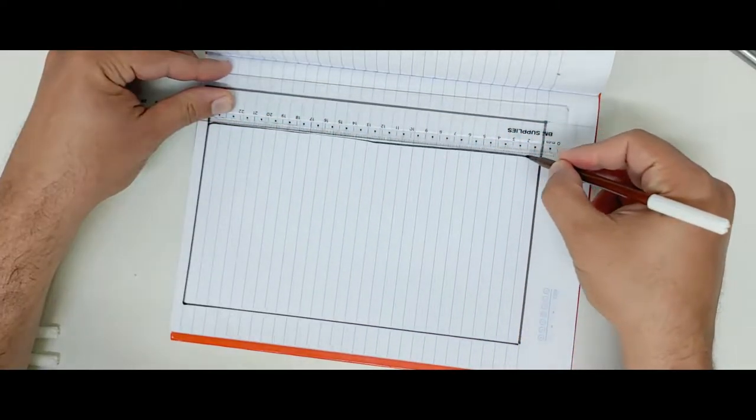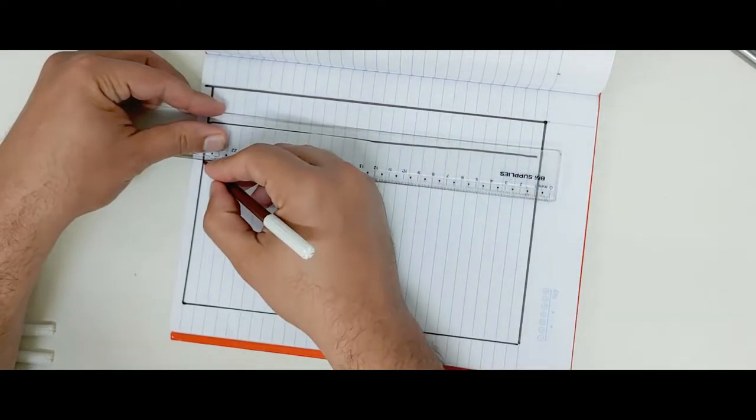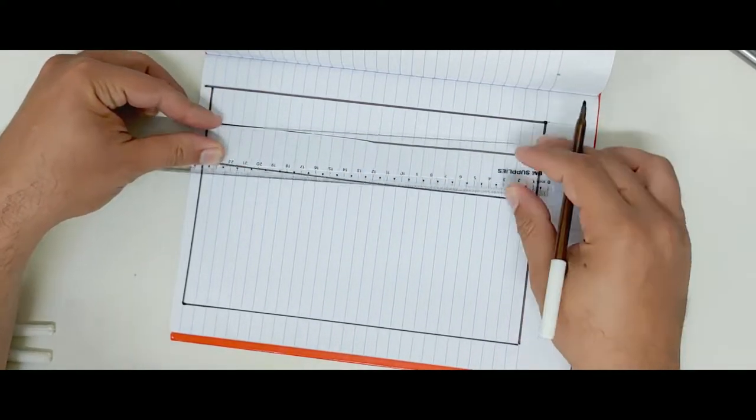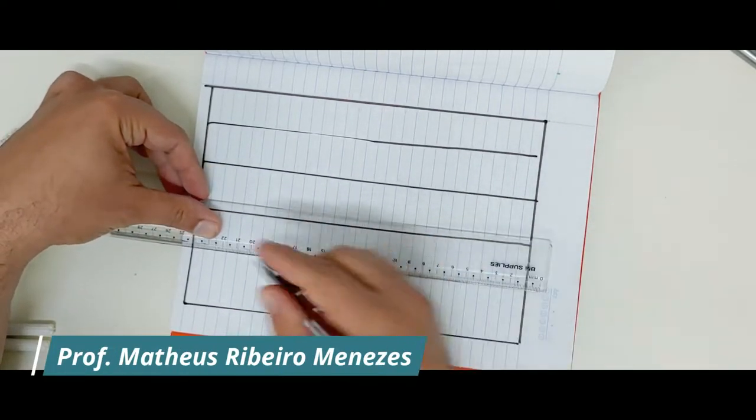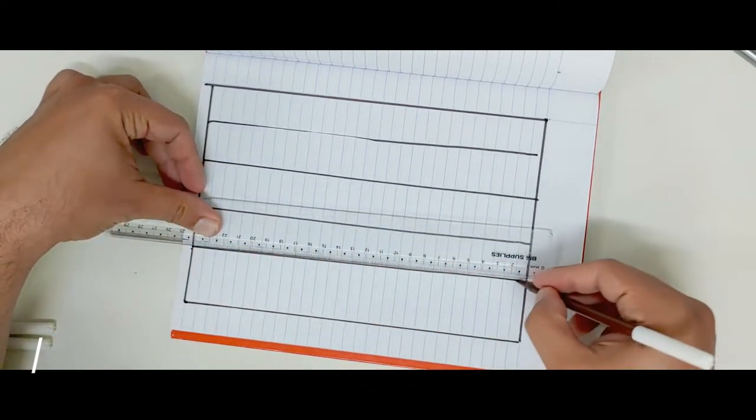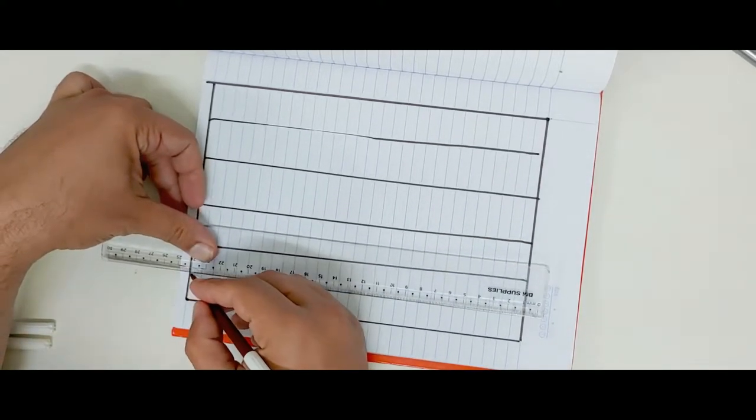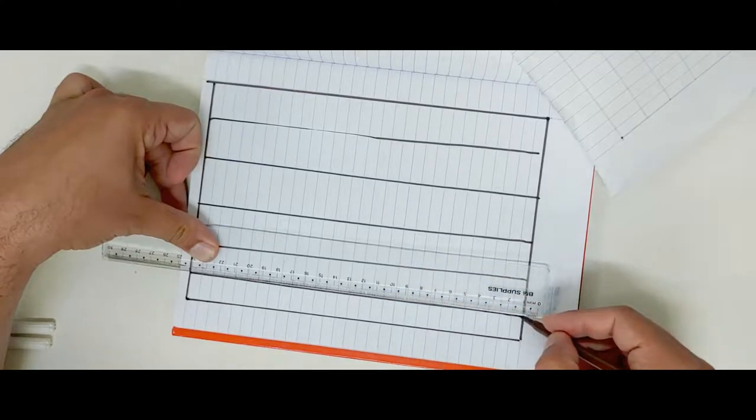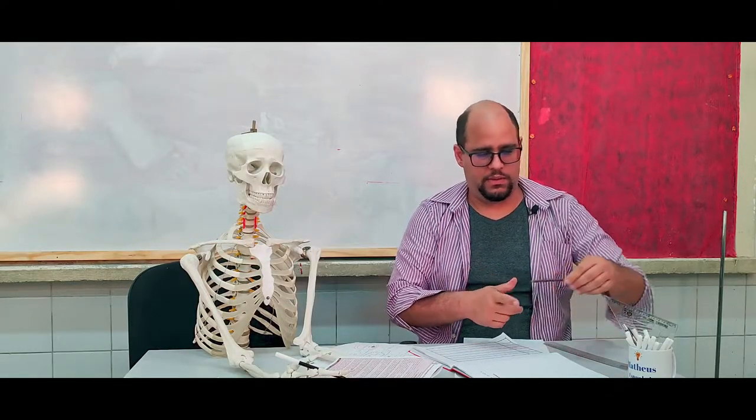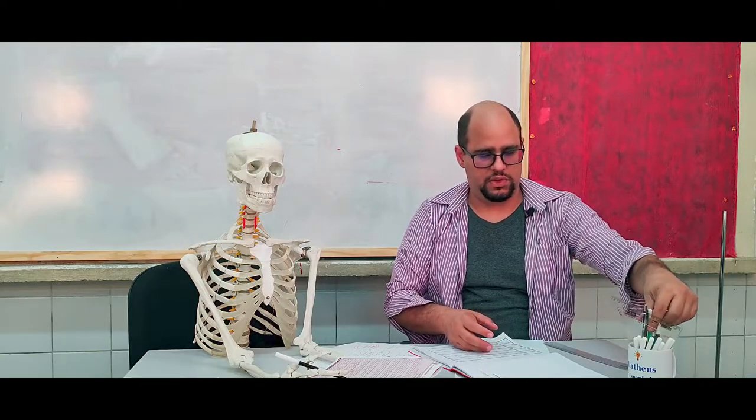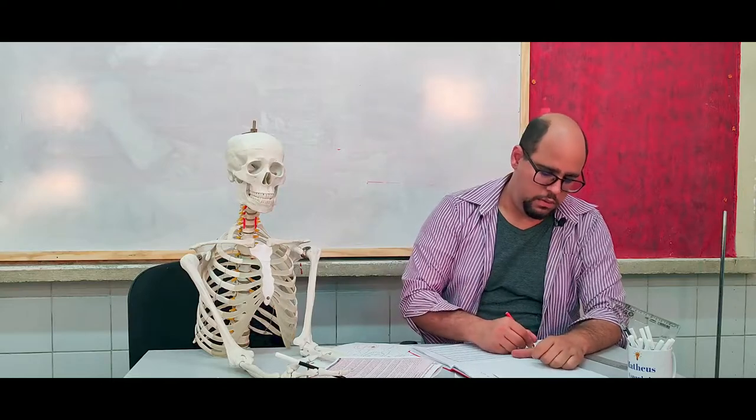9. 9:30. 10. 10:30. 11. Ready. Start putting it like this. Okay. So I already have my chart marked. My little table made. Let's go.